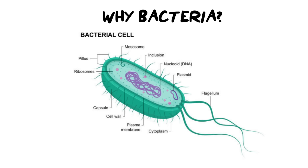One more thing we need to revise before we move on to how we actually genetically engineer organisms is why do we use bacteria? Because they are the main vectors or the main organisms that are going to help us do this job. We're going to have to go back to their anatomy. Inside bacteria, there are very simple sets of organelles. In fact, they don't have any major membrane-bound organelles. They do have ribosomes, a cell wall, a plasma membrane, and cytoplasm, but they lack all other membrane-bound organelles, including a nucleus. But what they do have, which is very unique and important to our discussion, is a plasmid.